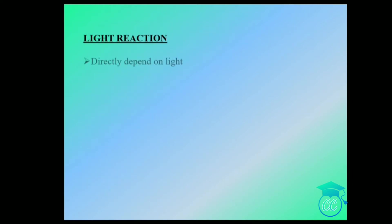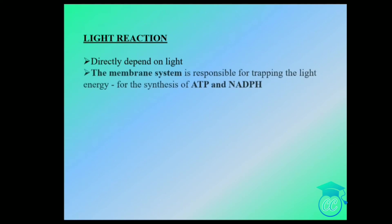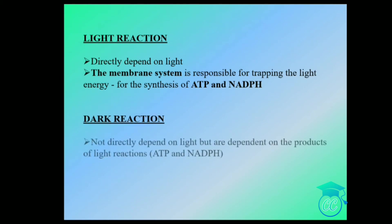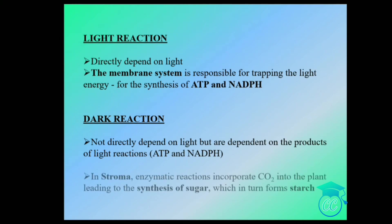Light reaction directly depends on light and its products are ATP and NADPH. Dark reaction does not directly depend on light, but depends on the products of light reaction — ATP and NADPH. Dark reaction occurs in the stroma, where enzymatic reactions incorporate carbon dioxide into the plant, leading to the synthesis of sugar, which in turn forms starch.